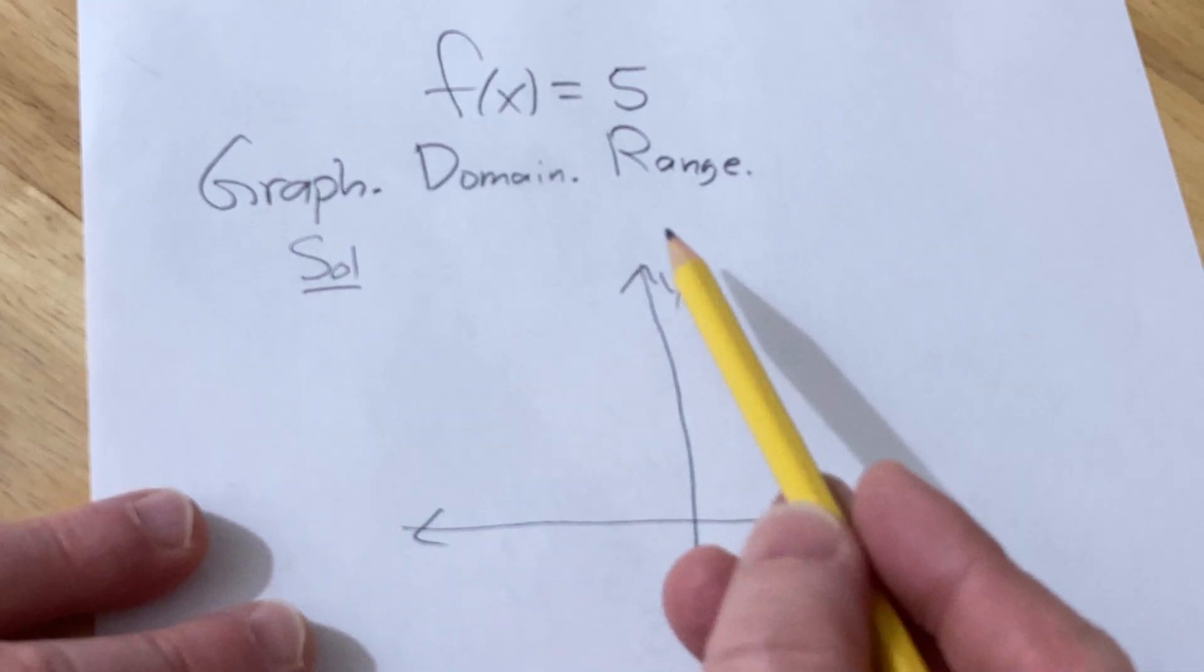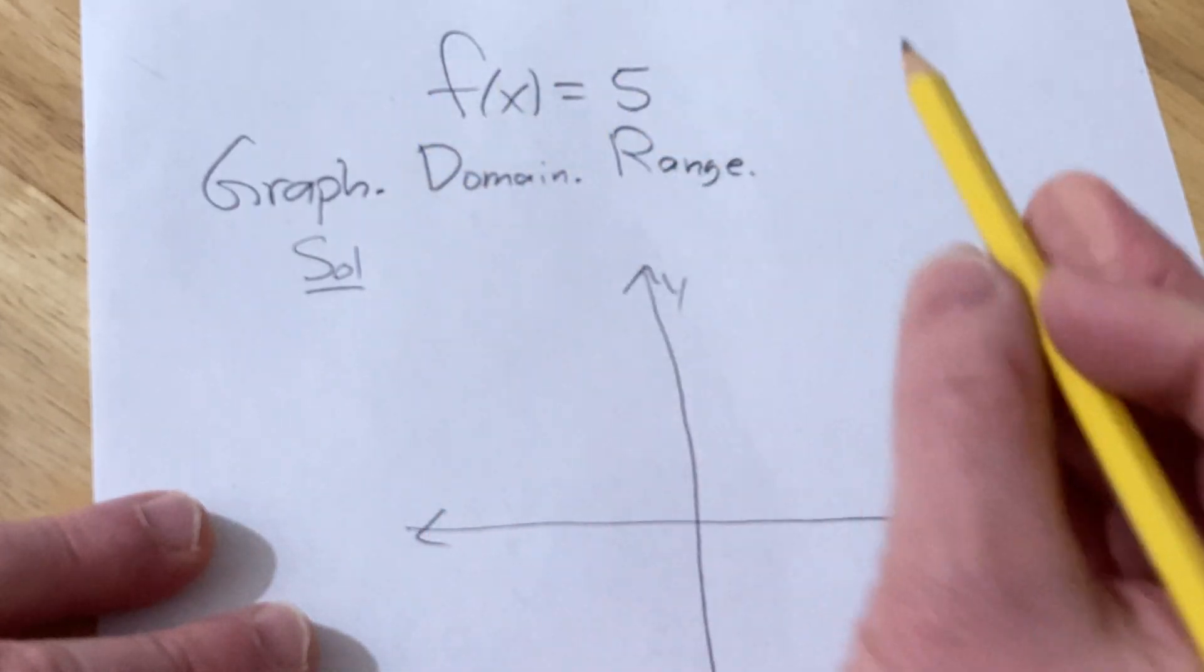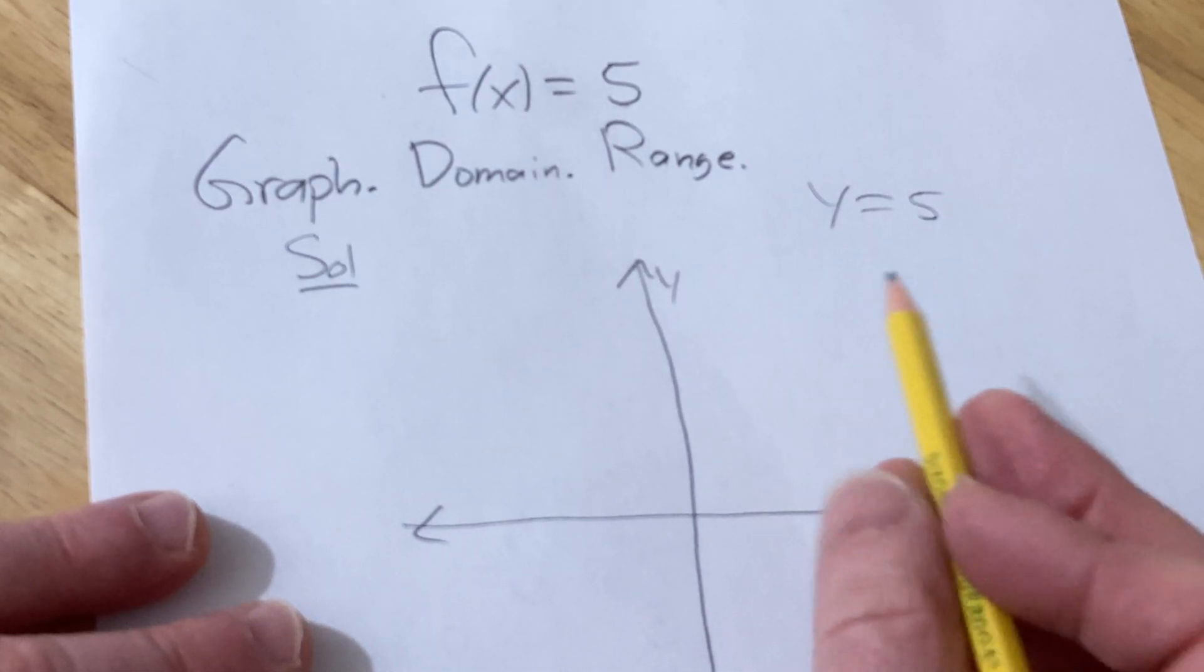And basically no matter what x is, f is 5. So remember that this is the same thing as y equals 5. So the y-value is going to be 5 no matter what.